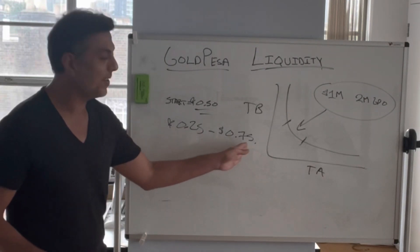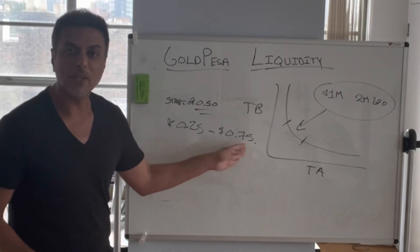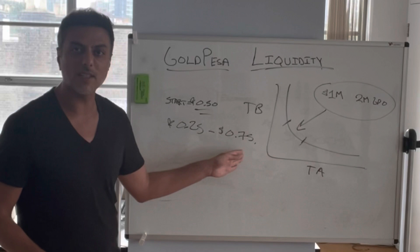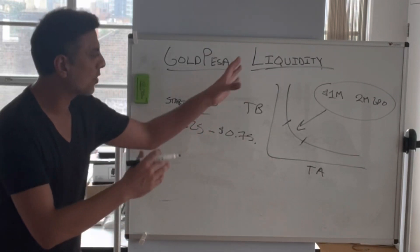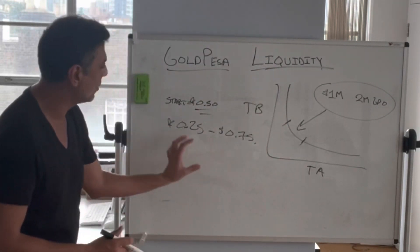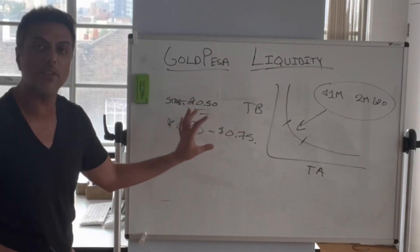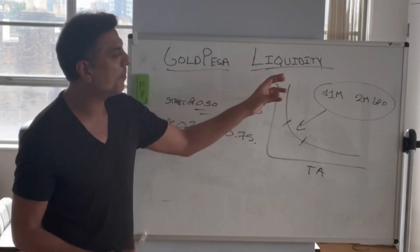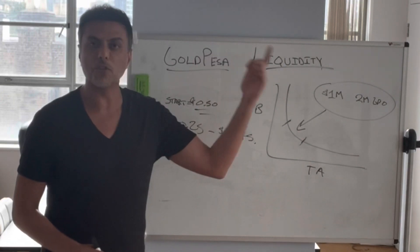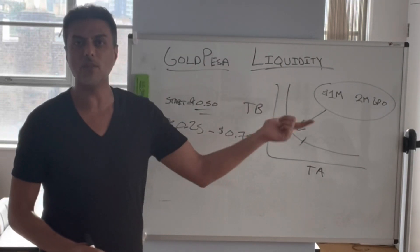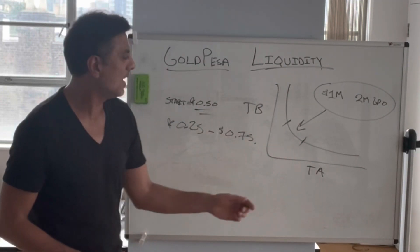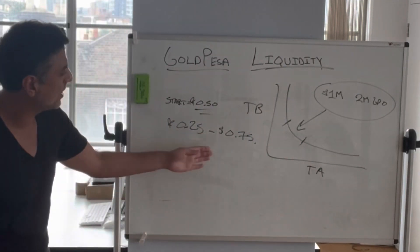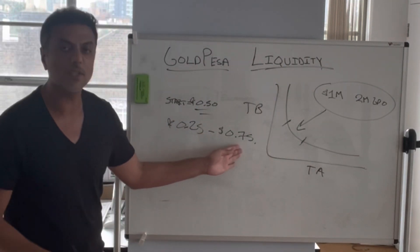Not infinity, but $0.75, which means you have concentrated your liquidity in this range. So the same amount of buy orders in version 2 would have taken you to infinity. In this version, it takes you to $0.75.